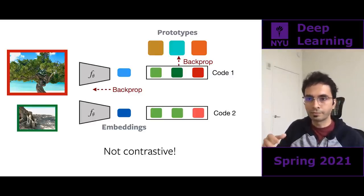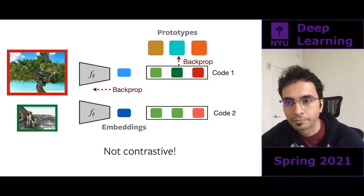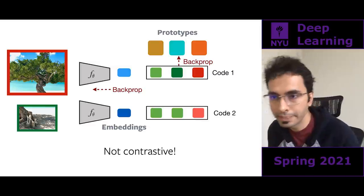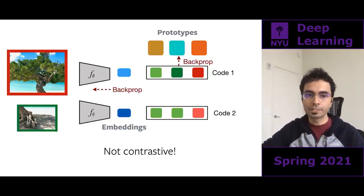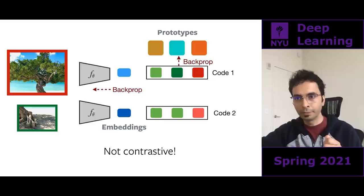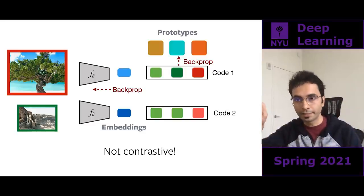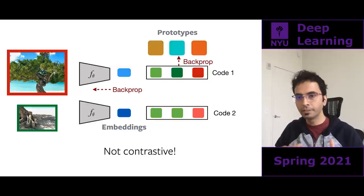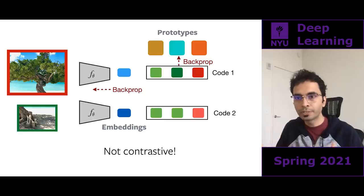The prototypes are initialized randomly — think of them as a bag of embeddings. At each forward pass, you take the embedding from f_theta and compute similarity to each prototype, producing a B×K matrix for batch size B and K prototypes. You then perform the Sinkhorn optimal transport algorithm to ensure codes are evenly distributed across prototypes.